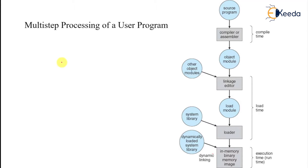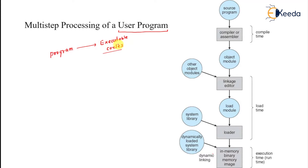Multi-step processing of a user program means after writing a program, and after that the generation of executable code — what are the different steps being followed. The first is your source program, and then we compile, or an assembler will do this compilation, and finally an object module will be generated. The object module is nothing but your assembly code.